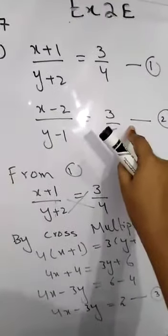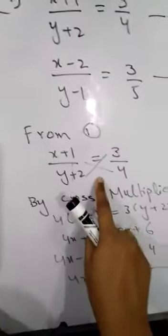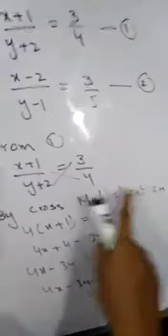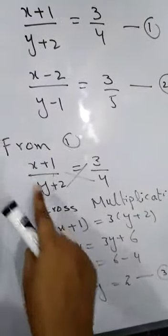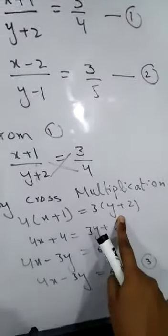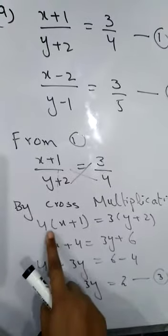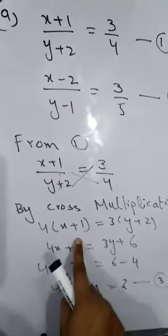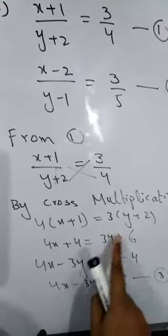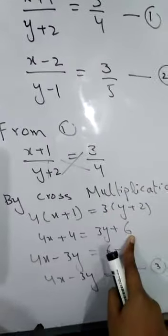The two fractional equations. From equation 1, this is the first equation. By cross multiplication we will solve this: 4 into x plus 1 and 3 into y plus 2. 4 will be multiplied by x: 4x, 4 into 1: 4. And 3 into y: 3y, and 3 into 2: 6.